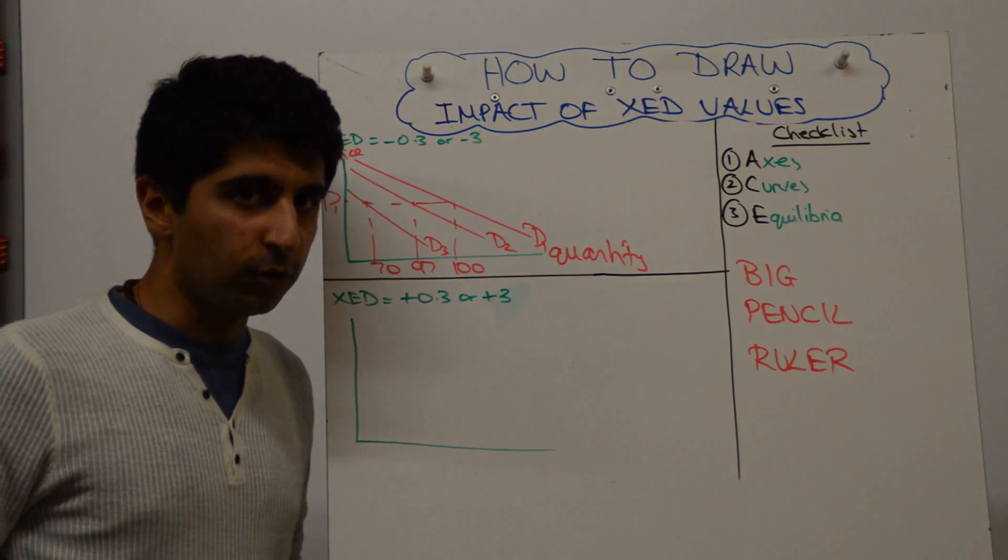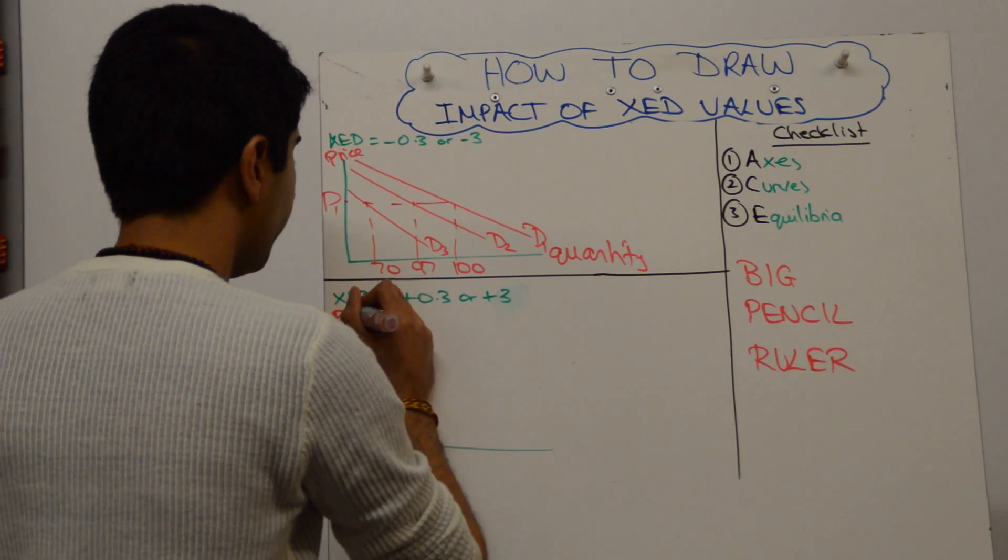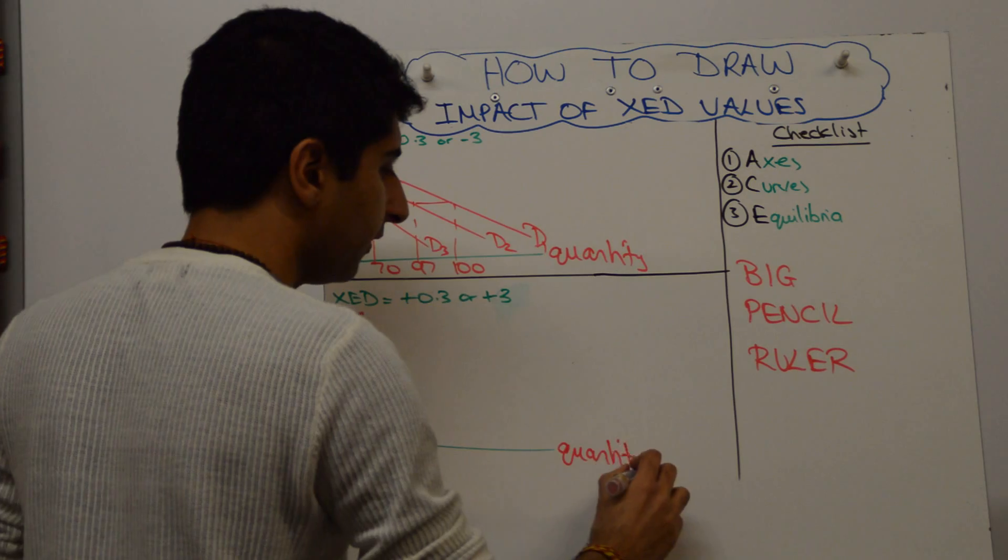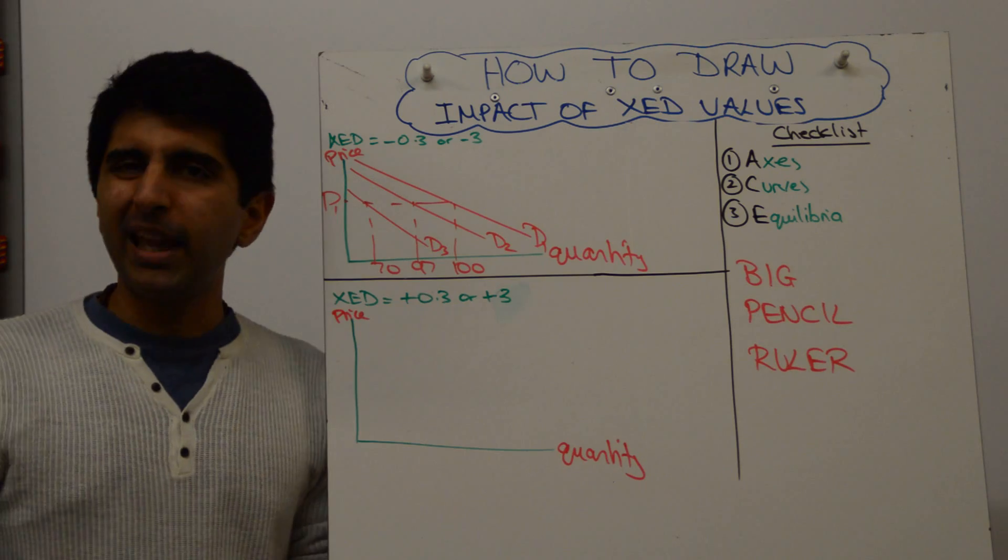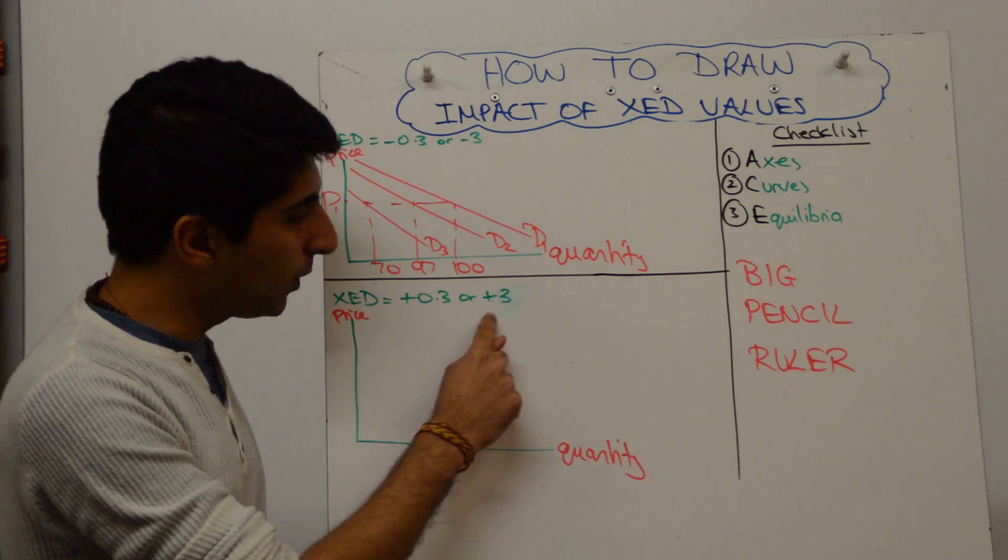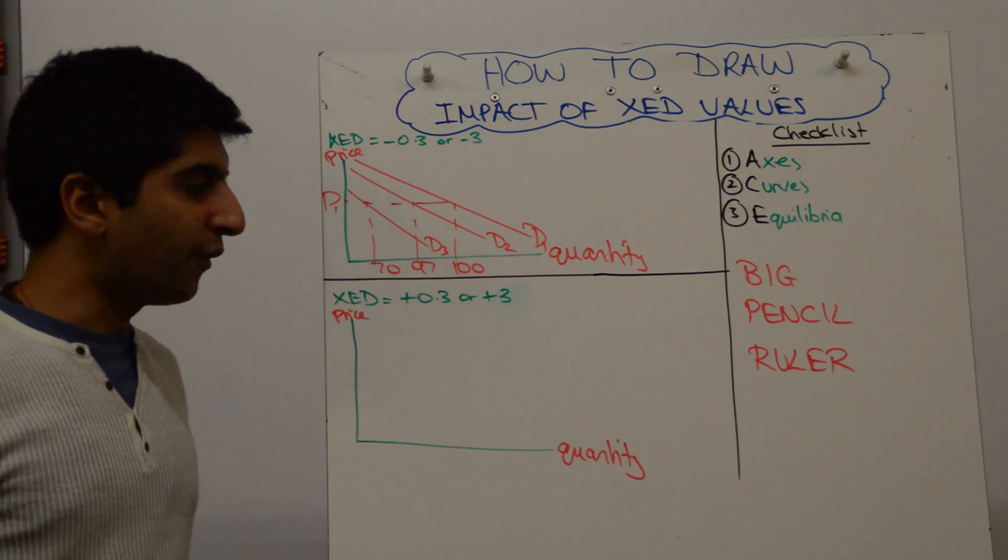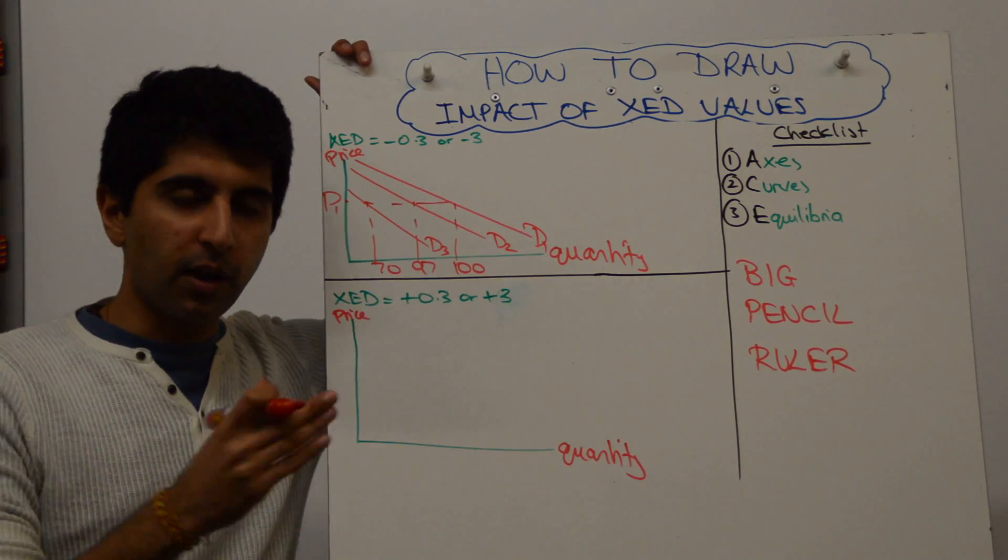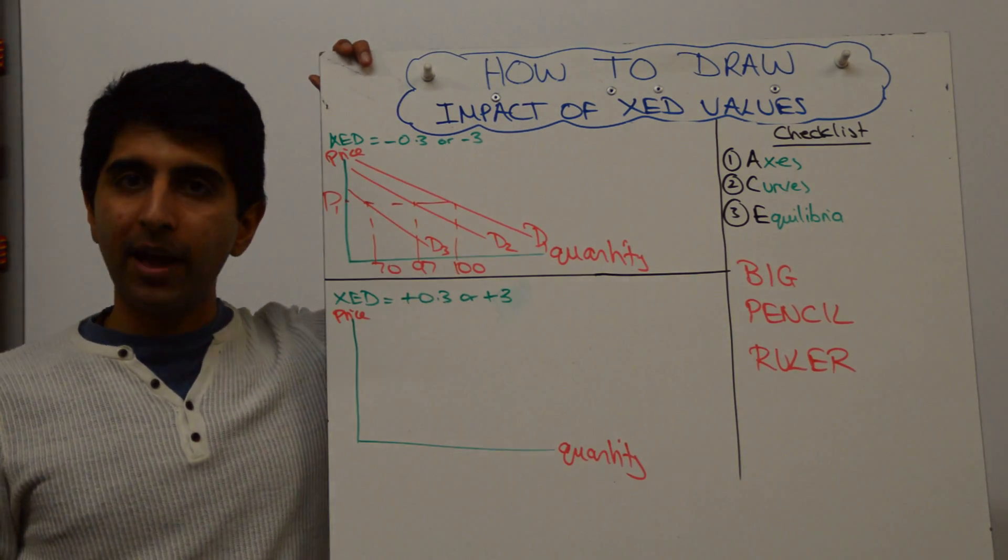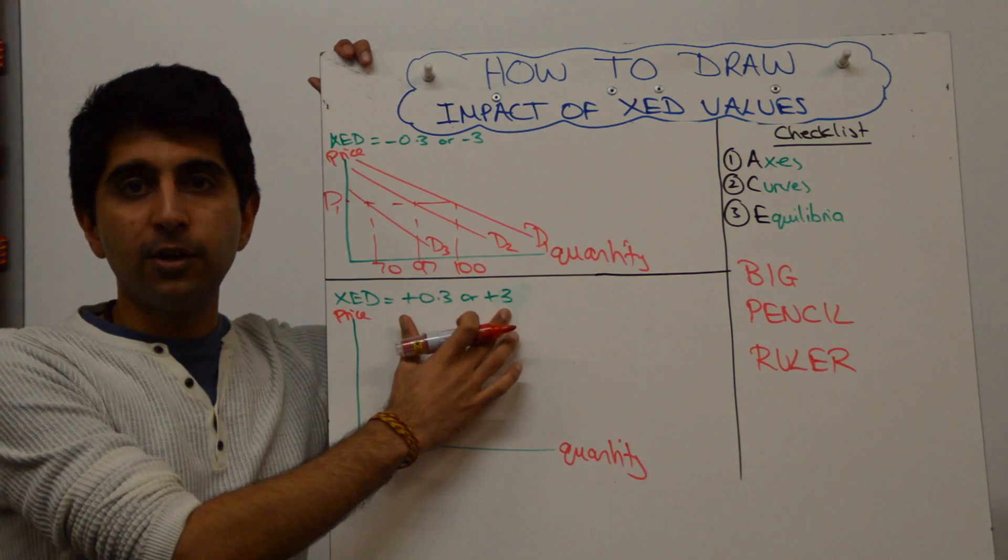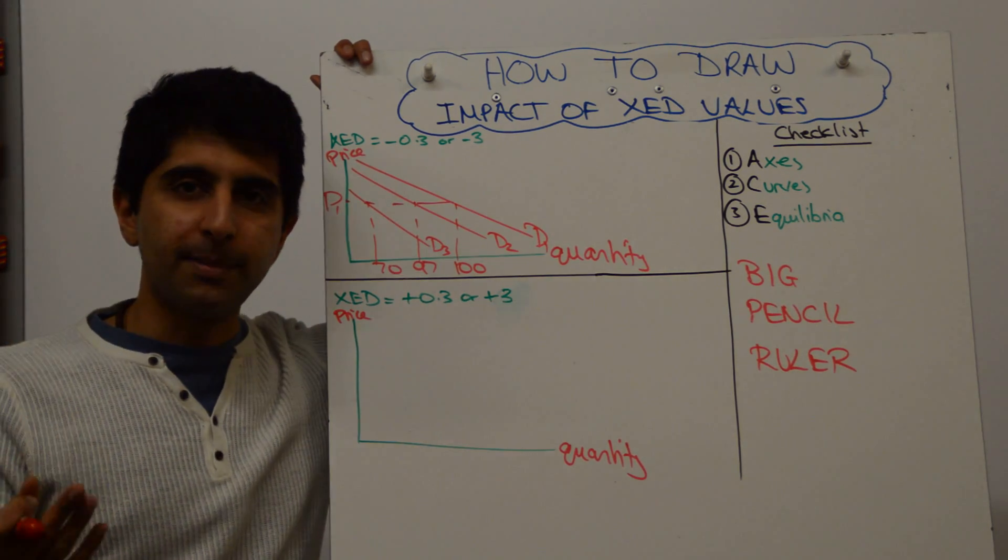We can do the same thing with substitutes. So let's take a simple example, Nike trainers versus Adidas trainers. First, let me label my axis here. So I'm going to assume that this is the market for Adidas trainers. So let's say the price of Nikes went up, again, keep the numbers simple, by 10%. We know that because we have got positive numbers here, we're working with substitute goods, weakly related here, strongly related there. So the price of Nike trainers went up, and the relationship between Nikes and Adidas trainers is plus 0.3, then there would be an increase in demand of Adidas trainers, but only by 3%. If the XED value was plus 3, then if Nike trainers went up by 10%, quantity demand of Adidas trainers would go up by 30%.